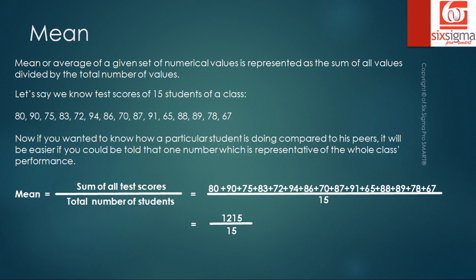This comes out to 81 upon doing all the computation. What's important to understand with respect to mean is that mean is influenced by the magnitude of values. By magnitude, we mean to say how large or how small the values are affects the value of a mean.